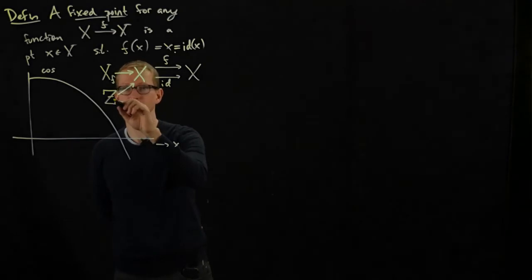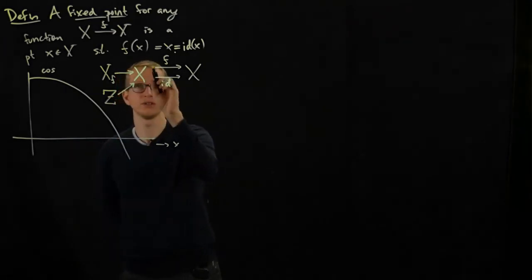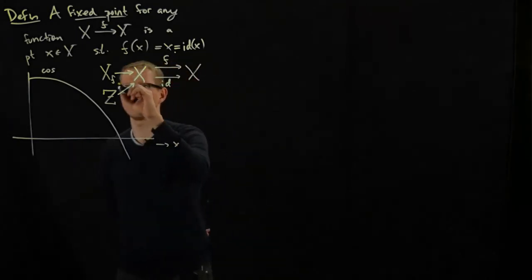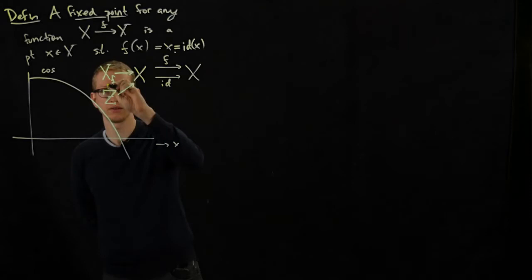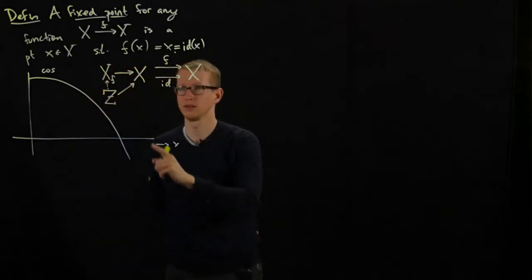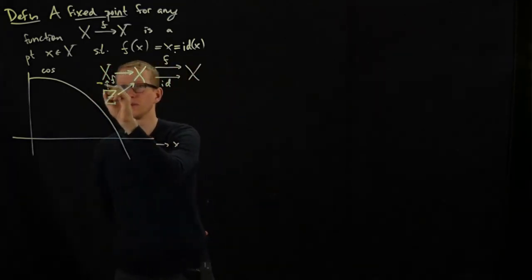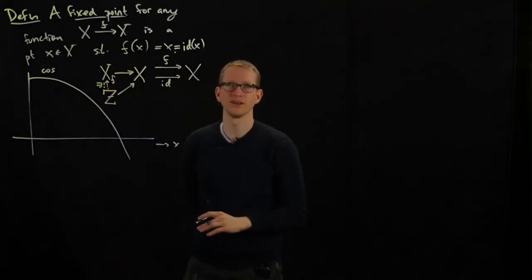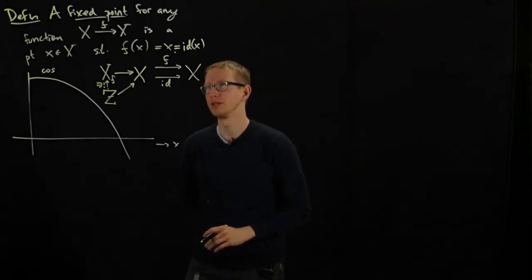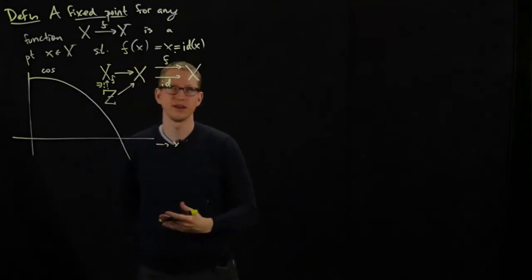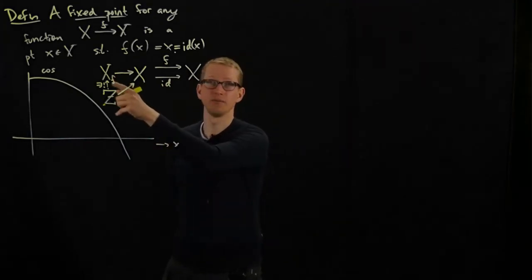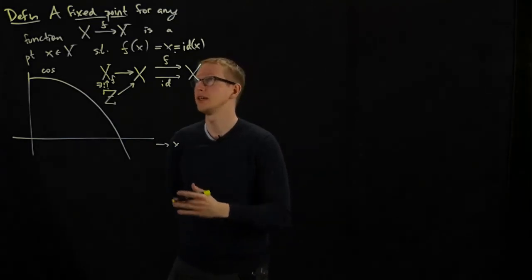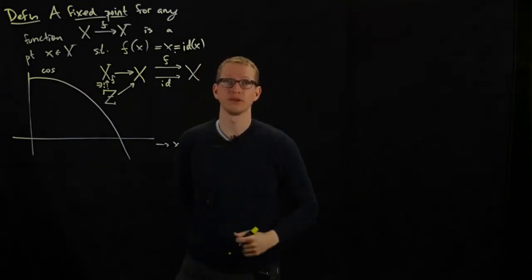Similarly, it satisfies the condition that for any other set with a function this way, such that this diagram commutes, then there exists a unique function from z to x such that this diagram commutes. Actually, I got to be honest with you, I just thought of this right now, so this may or may not be true, but it seems like it might be true. Exercise: check if really x_f satisfying the universal properties that I just claimed is indeed the set of fixed points of a particular function f.